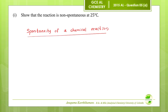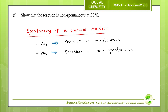Spontaneity of a chemical reaction is determined by the sign of ΔG, the Gibbs free energy change. If the ΔG value is negative, the reaction is spontaneous. If ΔG is positive, the reaction is non-spontaneous. If ΔG equals zero, the reaction is at equilibrium.